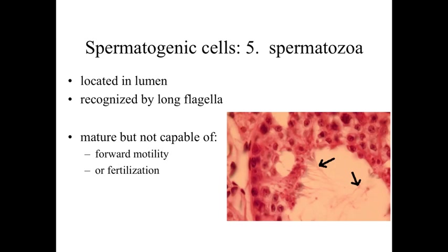Ultimately what we end up with are spermatozoa in the lumen, identified in the diagram by arrows near the lumen and recognized by their long flagella. They appear mature, but they're not yet capable of forward motility or fertilization. They still need to be primed and activated as they are stored and delivered into the female reproductive tract.